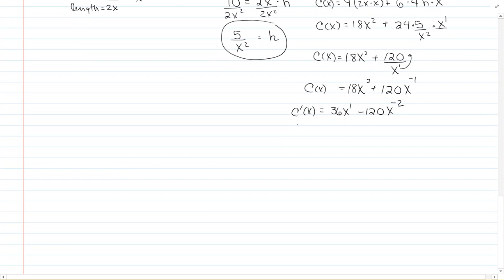Set that equal to 0. I'll move the x to the minus 2 back down to the denominator. Now solve for x by clearing fractions—multiply every term by x squared. 0 times x squared is 0, 36x times x squared is 36x cubed, and the last term cancels out to leave 120.